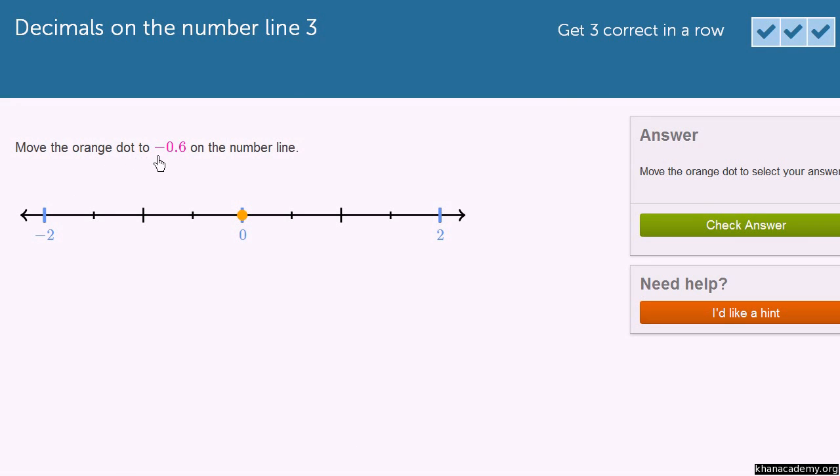We're asked to move the orange dot to negative 0.6 on the number line. So the dot right now is at 0. And let's see, this is negative 2. This is positive 2. So each of these big slashes look like it's 1.